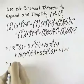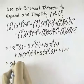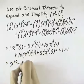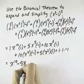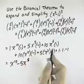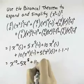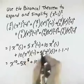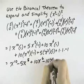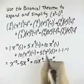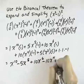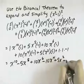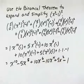So combining everything: 1 times 1 times x to the tenth is x to the tenth. Negative 1 times 5 gives negative 5x to the eighth. 10 times 1 is plus 10x to the sixth. 10 times negative 1 is minus 10x to the fourth. 5 times 1 is plus 5x squared. And 1 times 1 times negative 1 is minus 1.